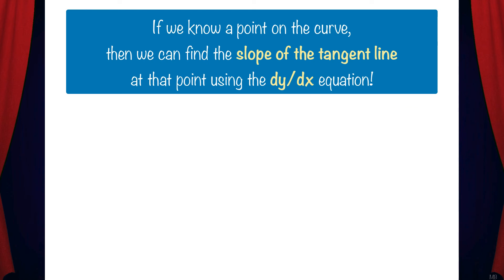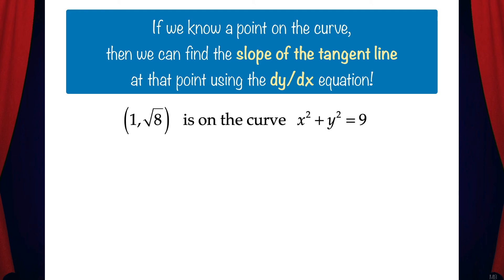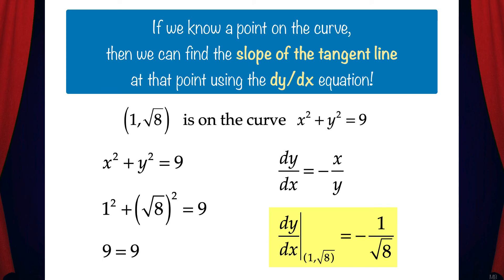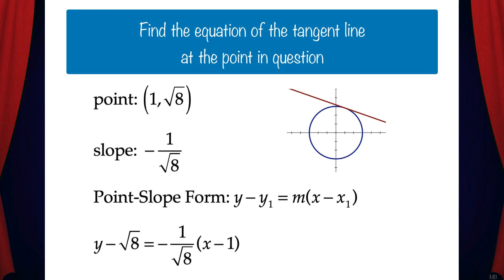So what does this tell us? Now if we know a point that's on the curve, we can find the slope of the tangent line at that point using the dy/dx equation. For example, the point (1, √8) is on this curve — we can check that by plugging in 1 and √8 for x and y, and we see it satisfies the equation. So if we need to find the instantaneous rate of change at that point, we plug into dy/dx equals negative x over y, which gives us negative 1 over √8. We now have the point and the slope, so we can use point-slope form to find the equation of the tangent line.